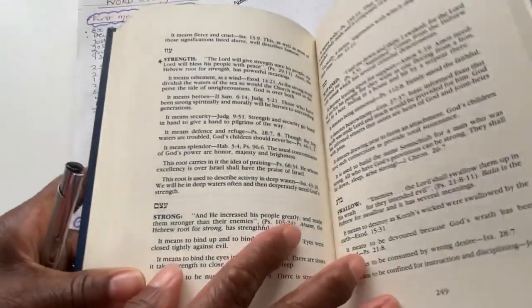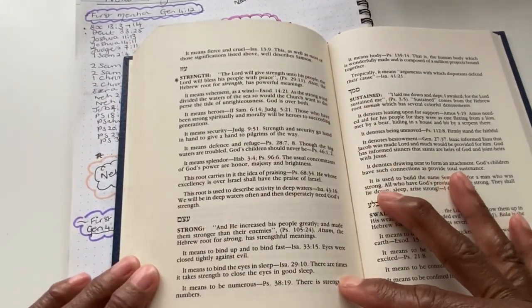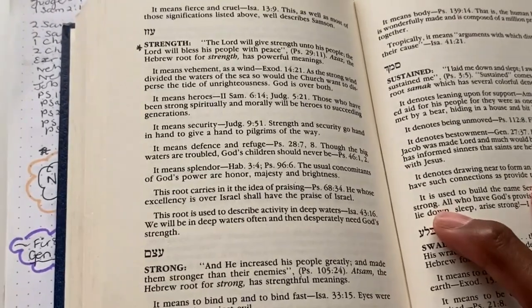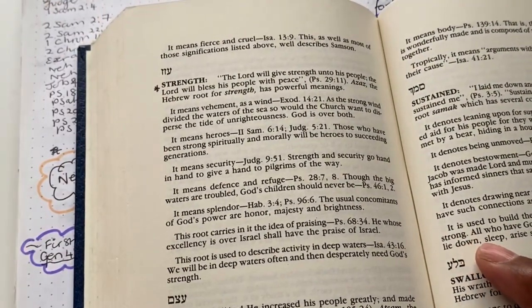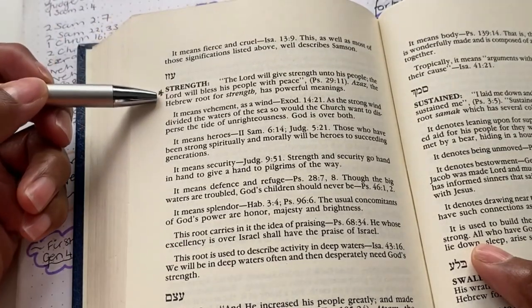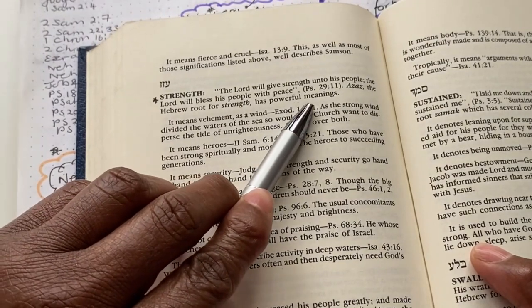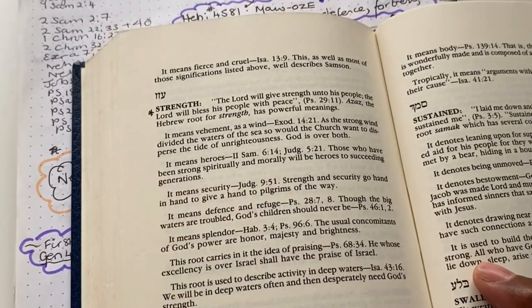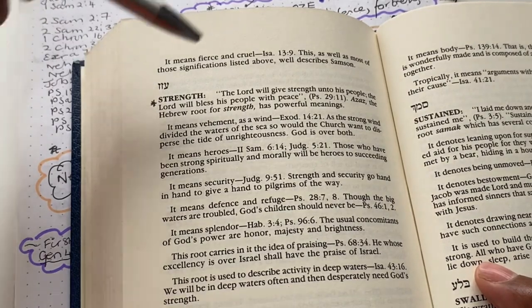And it gives you a really good overview of the word strength. If it's on Amazon, or if I can find a link for it, I will definitely put it in the description box below. But this book is quite old and I do use it if I'm doing a word study. So for this book, the book says strength, and it's giving Psalms 29 verse 11, the Lord will give strength onto his people, the Lord will bless his people with peace. And that's Psalms 29 verse 11.